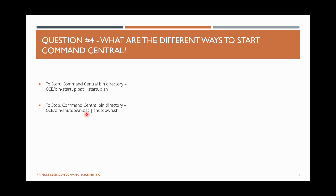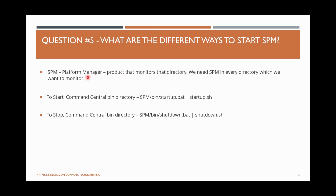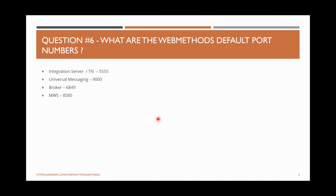Moving on to the next question: Platform Manager. In SoftwareAG, Platform Manager (SPM) monitors your directory — it helps communicate to Command Central whether your application is running or not. You need one SPM per machine you want to monitor; for example, one SPM for Integration Server and another for Universal Messaging. To start SPM, go to the SPM installation path bin directory, where you have startup.sh for Linux or startup.bat for Windows. Similarly, a shutdown script is available in the same folder.